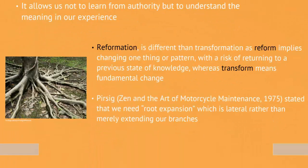Unlike informational or reformational learning, where we extend our already established cognitive capacities — in other words, we just extend more of what we know of the same — transformation expands us into new terrain. Reformation is different than transformation, because reform implies changing one thing or pattern, where there's always a risk of returning to a previous state. Whereas transforming means a fundamental change in the roots of how you look at things. Persig states that this refers to something like root expansion, which is more lateral — rather than merely extending the branches of what we know, we need to extend the roots of what we know.